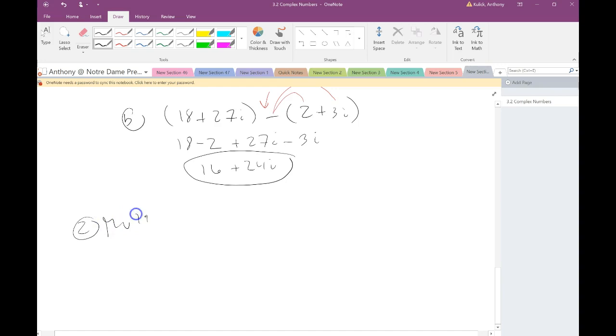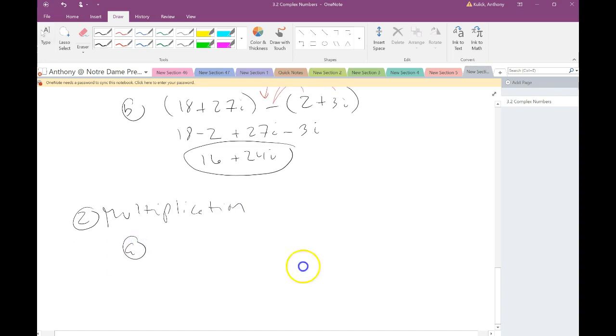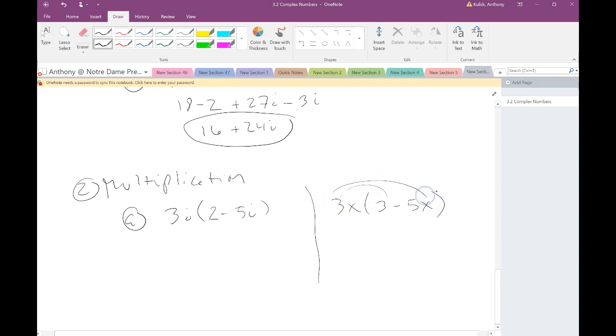Let's talk about multiplication. So let's say we have 3i times 2 minus 5i. So again, what will we do? We'll imagine, what would we do if we had x's? Well, in that case I'm just going to distribute and get 6i minus 15i squared, right? So we'll do the same thing. We're going to treat these i's just like we would x's. We're going to have 6i minus 15i squared. I don't know why I wrote different numbers here. I meant for these to be the exact same problem.